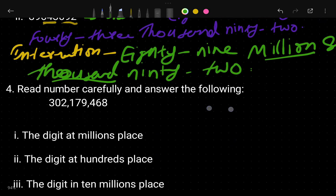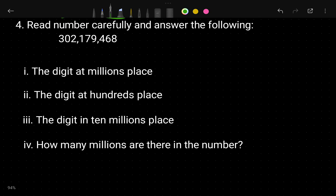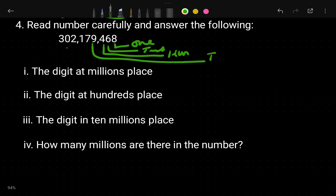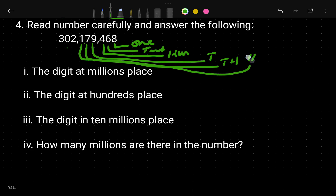The fourth question says: read the number carefully and answer the following. The number is already written in international format with groups of three. The place values from right to left are: ones, tens, hundreds, thousands, ten thousands, hundred thousands, million, ten million, hundred million.